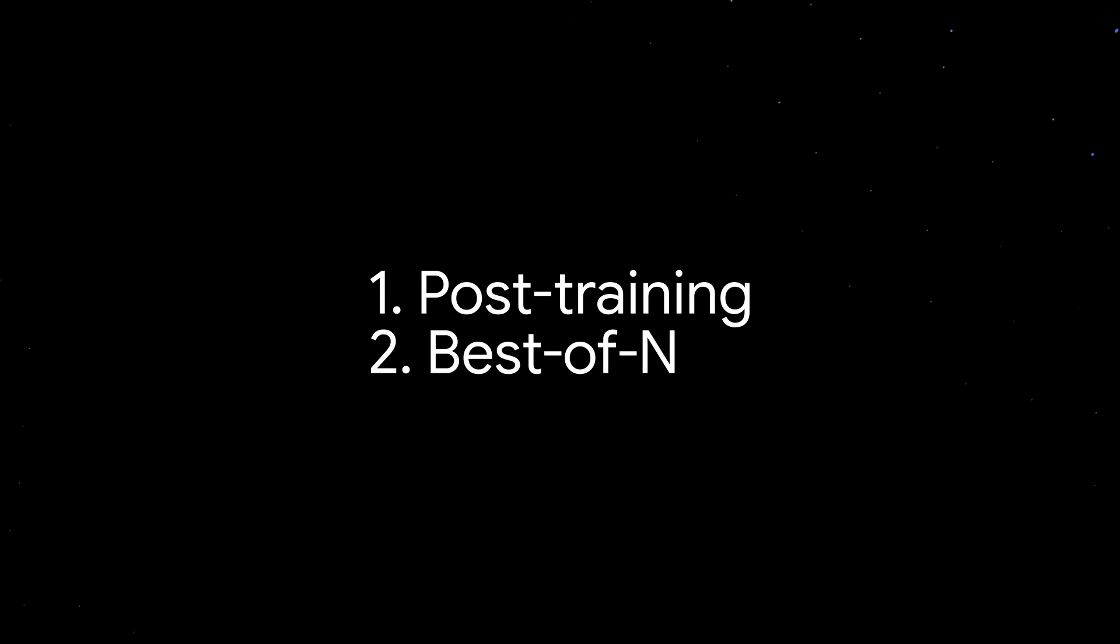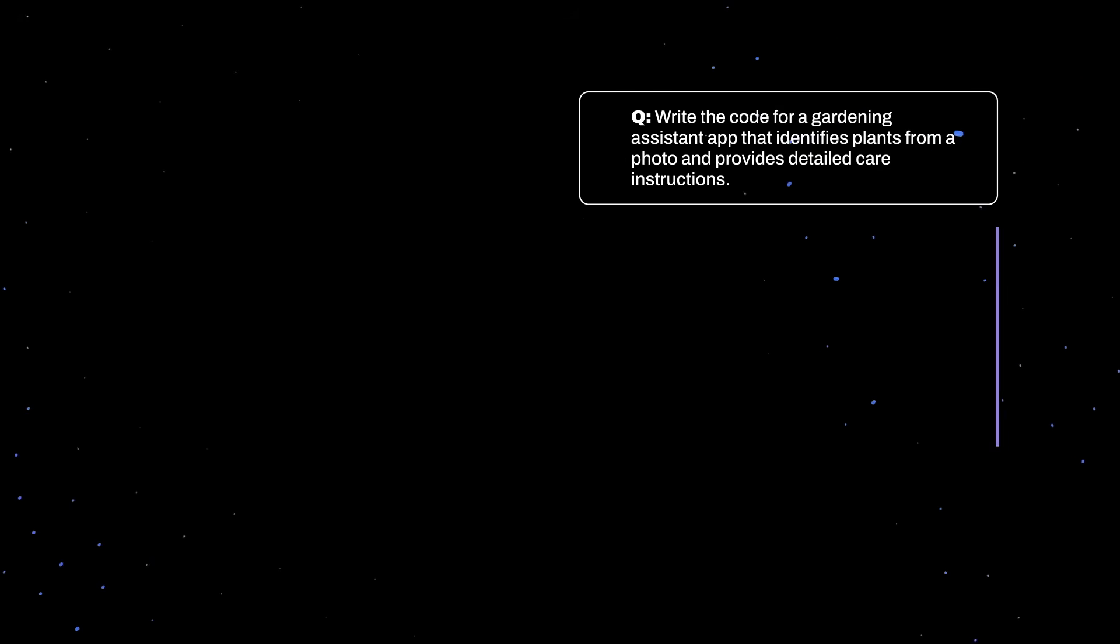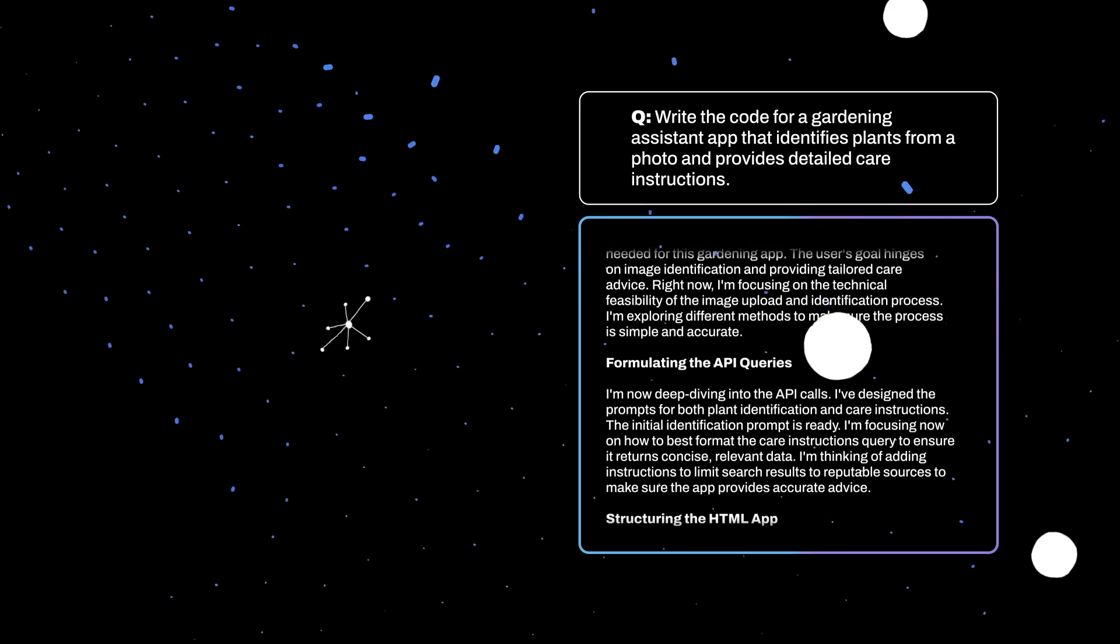And there are two main ways we can get models to use more compute when generating a response. During post-training, we can use reinforcement learning to make models think and reason more effectively by producing long chains of thought. By training on problems that have verifiable answers like math or code, the models practice reasoning and improve their skills. After the model is trained, you can deploy strategies like a best-of-n at test time where a model produces multiple responses to the same question, increasing the chance of a correct answer. Combining these strategies, we end up with thinking LLMs, which generate long reasoning traces to arrive at an answer to a user query.